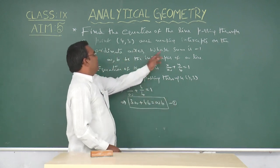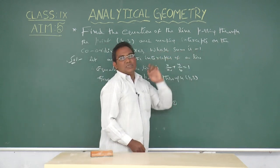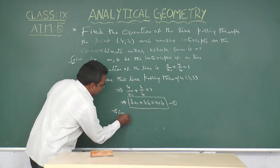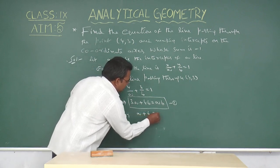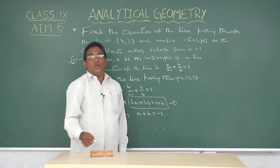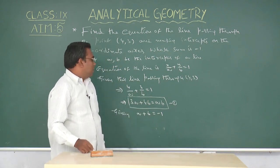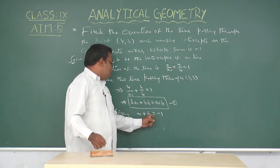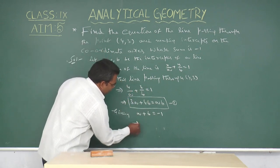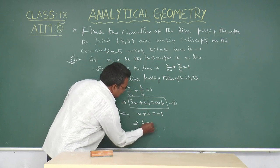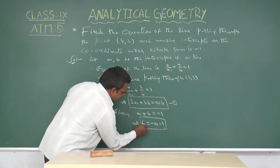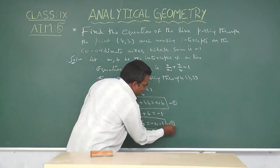Given that the sum of the intercepts is minus 1. That means a + b = -1. We evaluate the values of small a and small b by solving these two equations. From this equation, b may be written as -a - 1. Call it equation number 2.